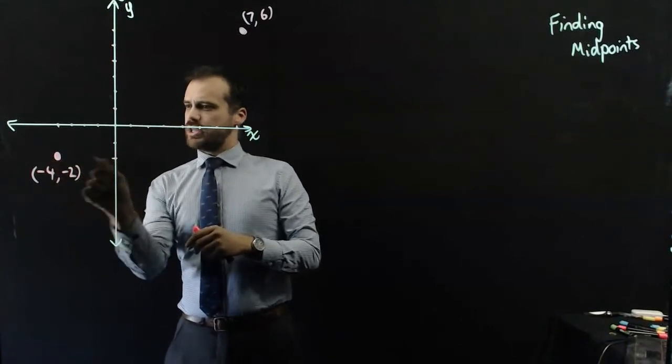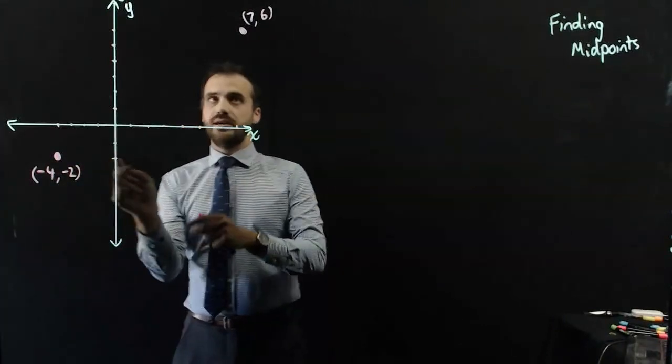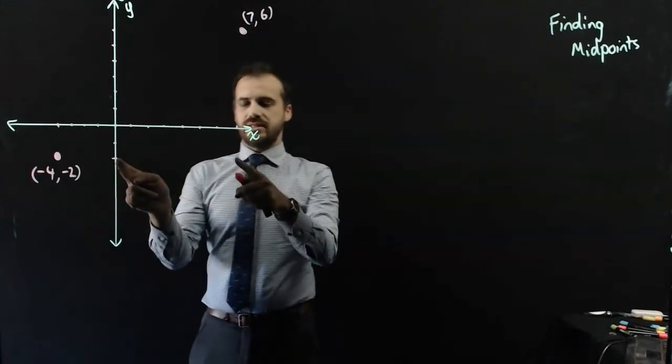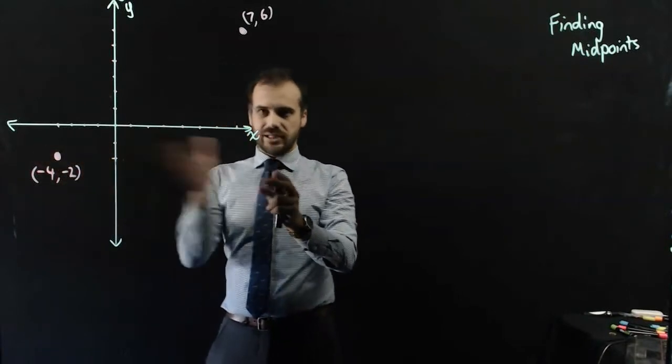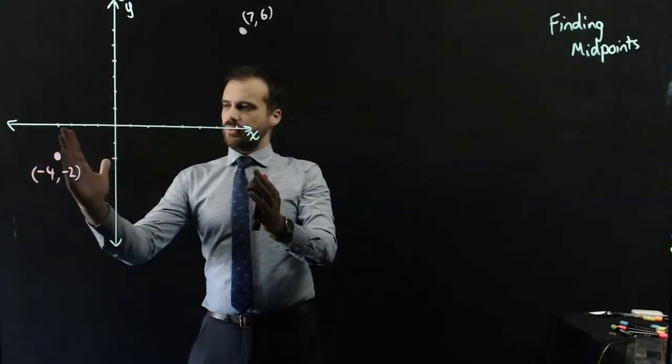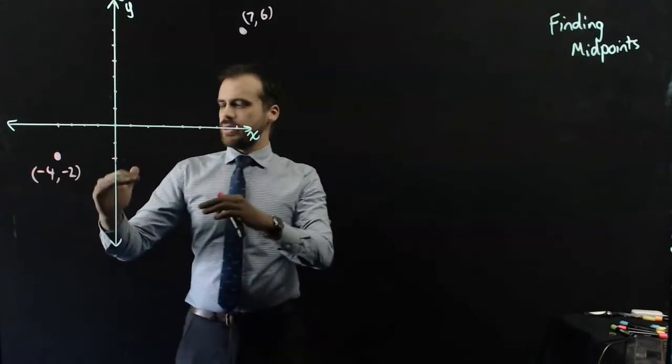Negative 4, so it's negative 4 across from there to there, and x is 7, and it's 7 across from there to there. So the distance from there to there is 11. Now, we want to go halfway across.